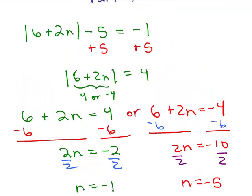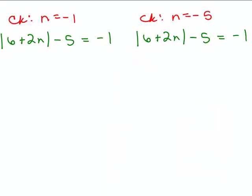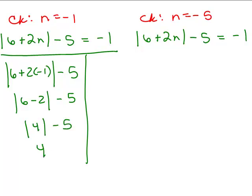We have solutions of negative 1 and negative 5, but I never trust myself unless I go back to the original problem. The original was: absolute value of 6 plus 2n, minus 5, equals negative 1. Checking n equals negative 1: absolute value of 6 plus 2 times negative 1, minus 5. Inside the absolute value, 6 minus 2 is 4; absolute value of 4 is 4; and 4 minus 5 is negative 1. The right-hand side is negative 1 — it checks out, so n equals negative 1 is a solution.